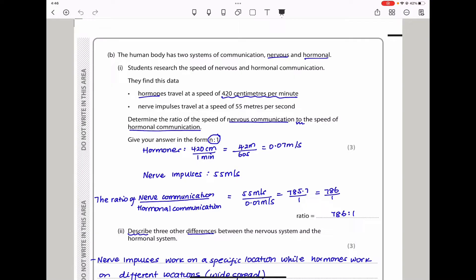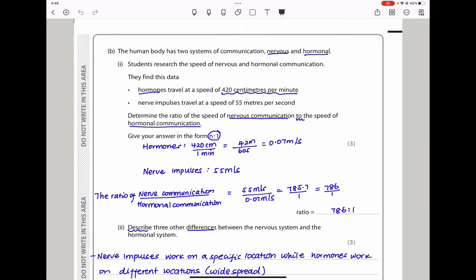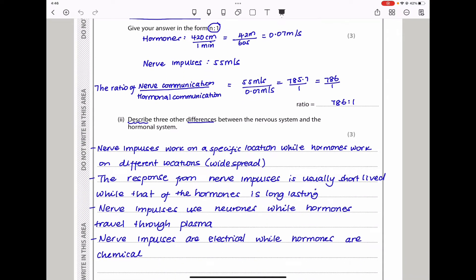The next step is to find the ratio, which is 55 to 0.07, which is 785.7 to 1, and then 786 to 1, giving us 786 to 1 as the ratio we were looking for.